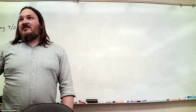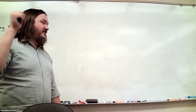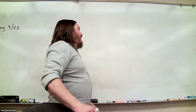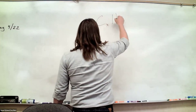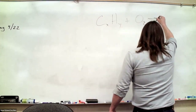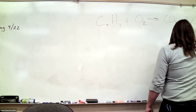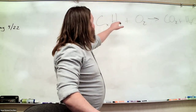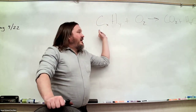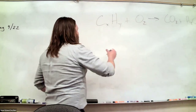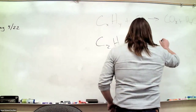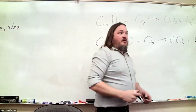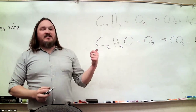Combustion reactions are the single easiest type to recognize because they always have the same two products and always share one reactant — it's always something with carbons and hydrogens plus oxygen, and it always makes CO₂ and water. Even if the hydrocarbon has an oxygen in it, like ethanol C₂H₆O burning, as soon as you see + O₂ → CO₂ + H₂O, it's combustion every time, and every combustion reaction is a redox reaction.